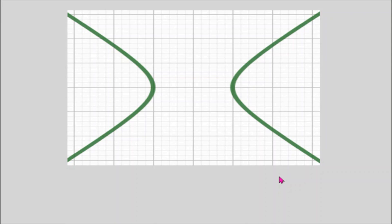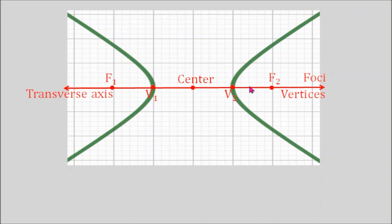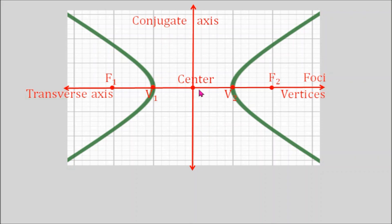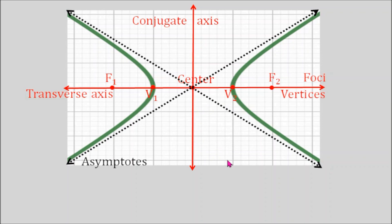Some hyperbolas open to the left and to the right. The parts are: we have the center, the vertices — vertex 1 and vertex 2 — and the foci — focus 1 and focus 2. We have the transverse axis, a line that crosses the foci, the vertices, and the center. This line divides our hyperbola into two congruent parts, meaning if we fold our graph along this line, the upper part coincides with the lower part. We also have the conjugate axis, which crosses the center and is perpendicular to the transverse axis. Then we have the asymptotes — lines that are approached by our graphs, but our graphs don't cross nor touch these lines.